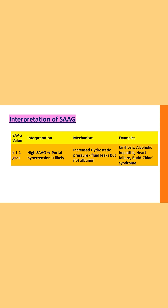Coming to the interpretation of serum ascitic albumin gradient or SAAG: if the value is more than or equal to 1.1 grams per deciliter, we interpret it as a high SAAG, and the cause is most likely portal hypertension. In portal hypertension, there is increased hydrostatic pressure which leads to leakage of fluid into the peritoneal cavity. But since there is no damage to the peritoneal membrane, protein from the serum does not leak out — only the fluid leaks out. That is why the difference between serum albumin levels and ascitic fluid albumin levels is high, leading to an increased SAAG value.